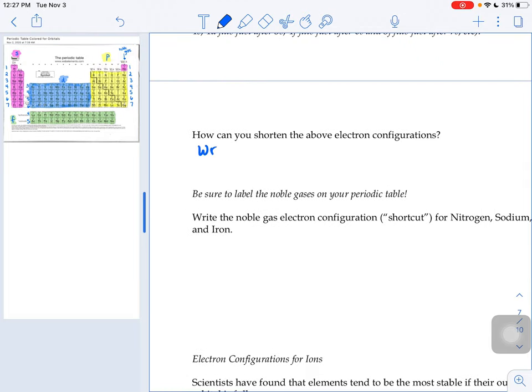So what we're going to do is write down the closest noble gas before the element and add on the rest.